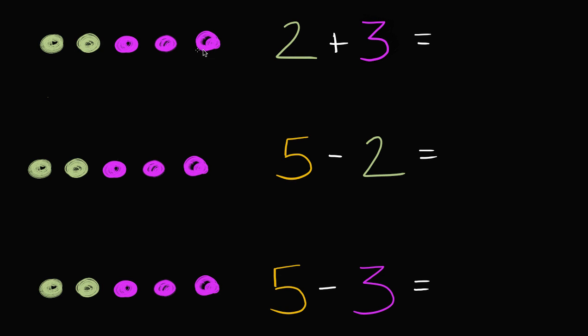I have two green balls and three purple balls, so how many balls do I have all together? Well, that's going to be two green balls plus three purple balls, which is five balls all together. And you see that right over there. There's five balls all together. We can count them: one, two, three, four, five.